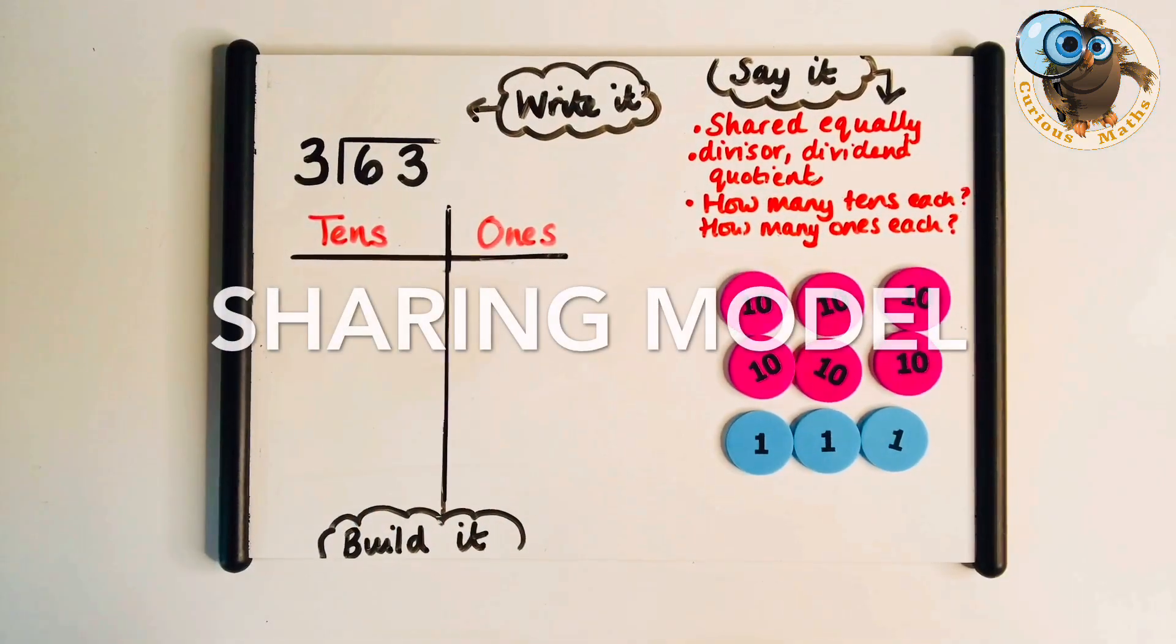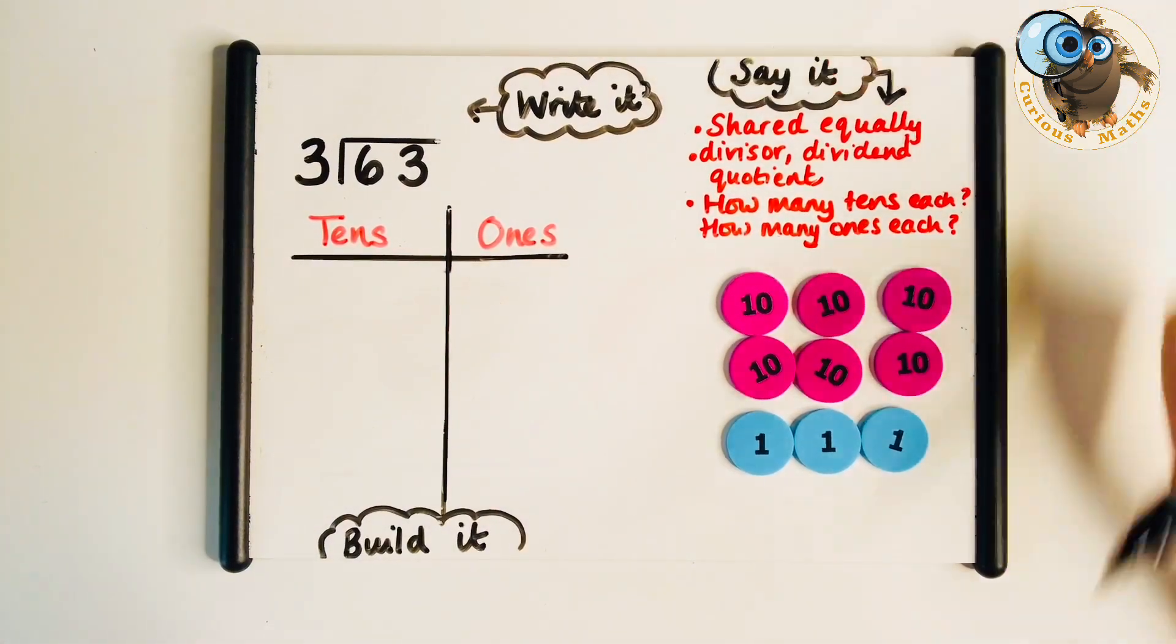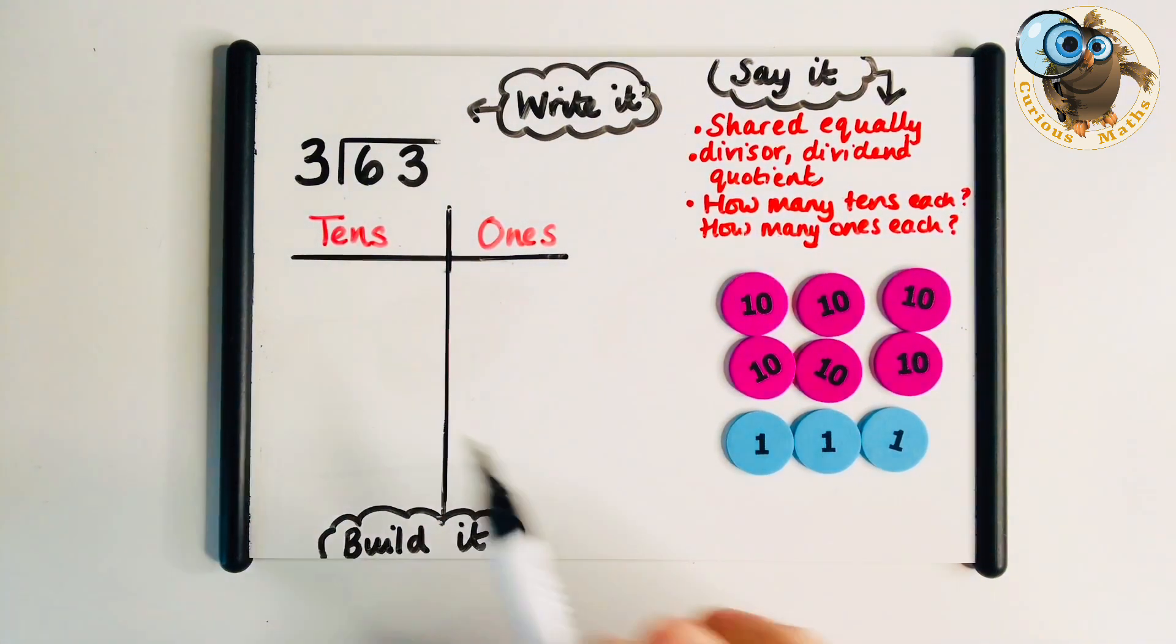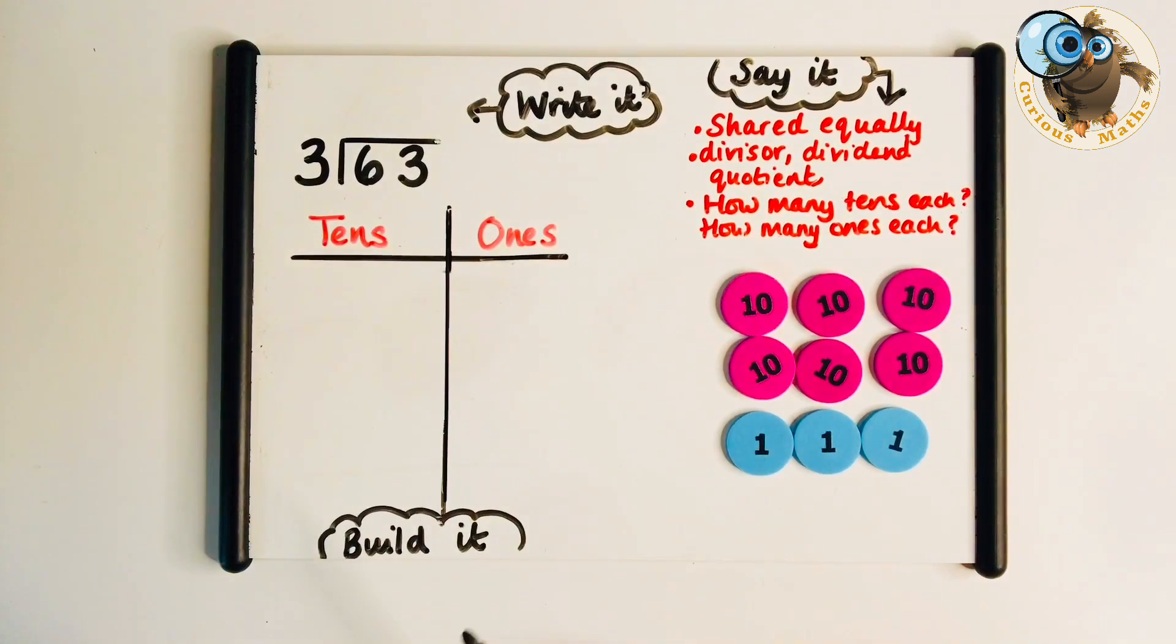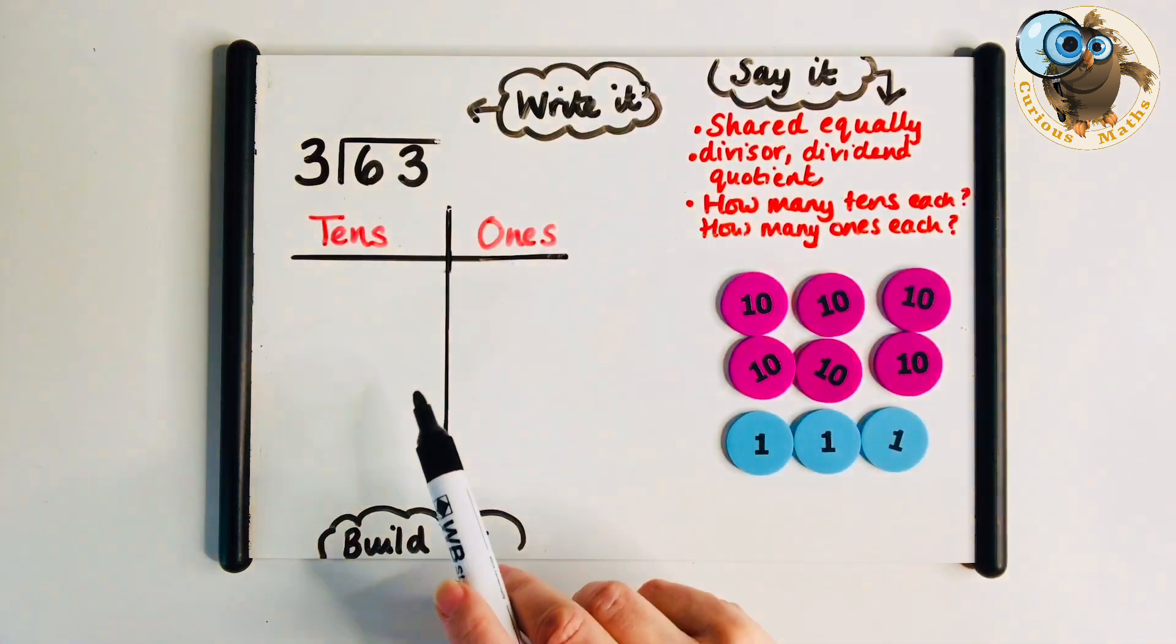Let's start with the build. For division I like to do the build it and write it at the same time because it's helpful for children to see the connection. We've got 63 divided by 3. For these Year 4 numbers we're using a sharing model to support understanding from Key Stage 1, and because it's manageable with small numbers. We're doing 63 cakes share between 3 people so I draw 3 lines.